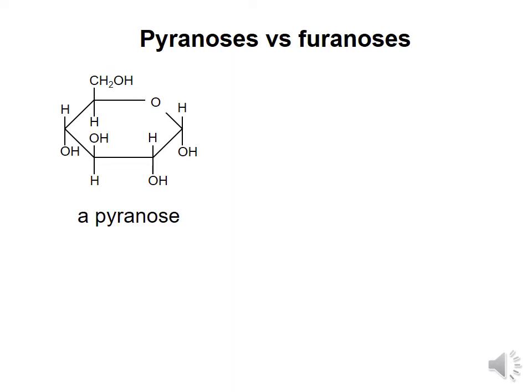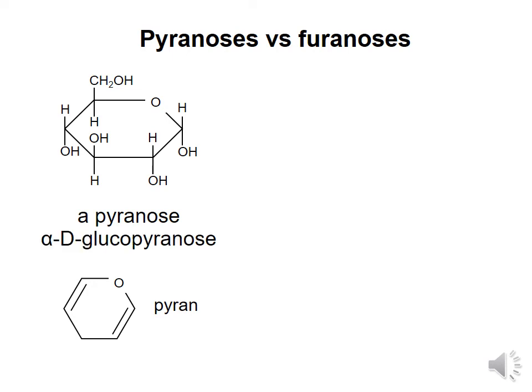When monosaccharides form a 6-membered ring, they are called pyranoses. This is because pyran is a molecule consisting of a 6-membered ring of 5 carbons and 1 oxygen, just like a monosaccharide 6-membered ring. Thus, when glucose is in its 6-membered ring form, it could be called glucopyranose. More specifically, the molecule shown here is alpha-D-glucopyranose because the anomeric hydroxyl is in the alpha position, and the highest numbered chiral carbon is in the D configuration. Remember that in this course all sugars shown will be in the D forms.